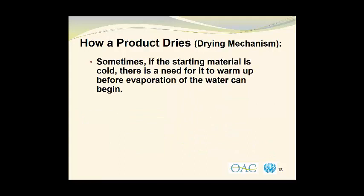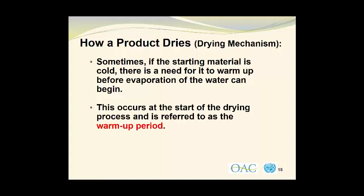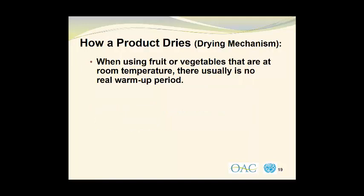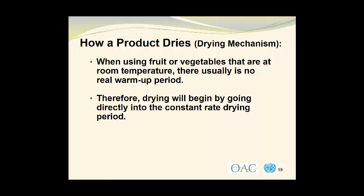Sometimes, if the starting material is cold, there is a need for it to warm up before evaporation of the water can begin. This occurs at the start of the drying process and is referred to as the warm-up period. When using fruit or vegetables that are at room temperature, there is usually no real warm-up period, and drying will begin by going directly into the constant-rate drying period.